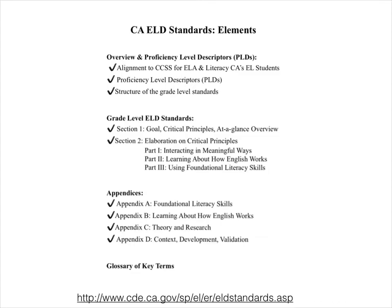It is in this document where you can find out more about the alignment to the California state standards. You can read about the proficiency level descriptors and learn about the structure of the grade level standards. Then there are the actual grade level ELD standards in two sections. Finally, there are four appendices and a glossary of key terms.